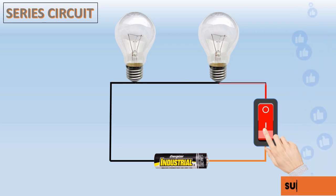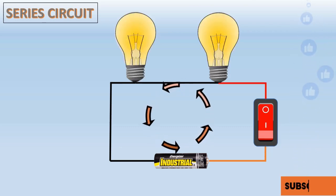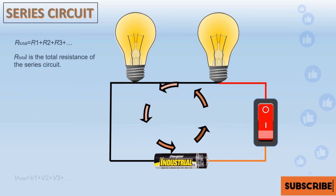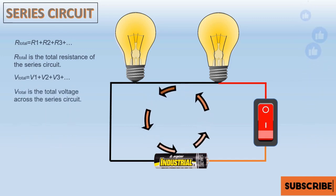In a series circuit, there is only one path for the electric current to flow from the power source, such as a battery, through each connected component and back to the source.